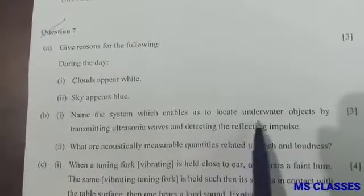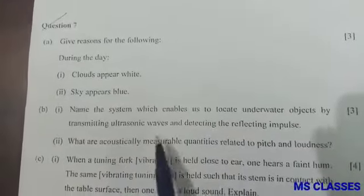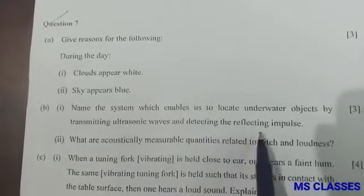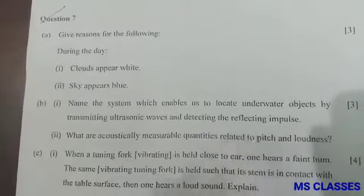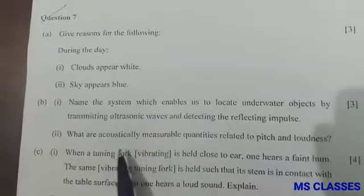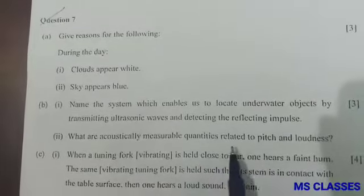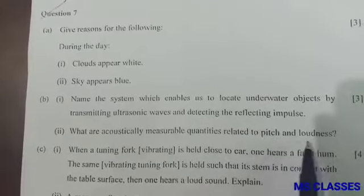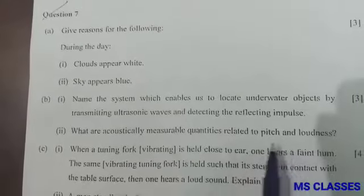Part (b): First, name the system which enables us to locate underwater objects by transmitting ultrasonic waves and detecting the reflecting impulse. Sonar. Second, what are the acoustically measurable quantities related to pitch and loudness? For pitch, it's frequency, and for loudness, it's amplitude.